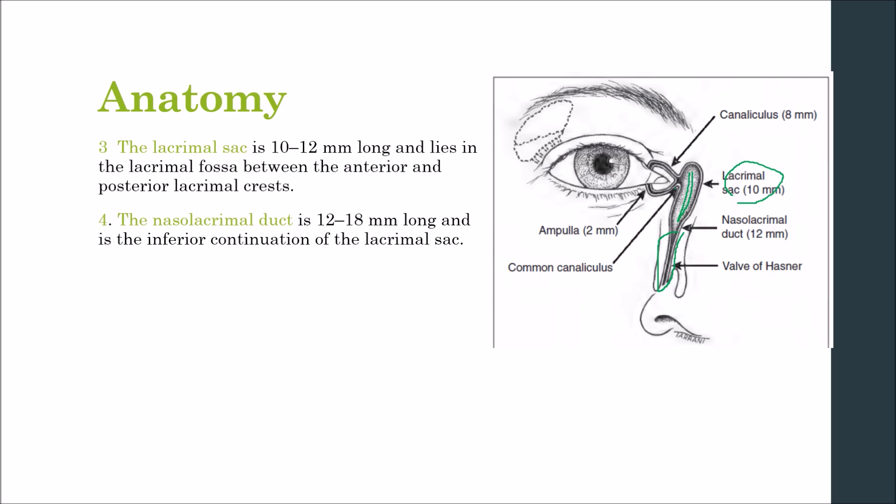The nasolacrimal duct (NLD) descends and angles slightly laterally and posteriorly to open into the inferior nasal meatus, lateral to and below the inferior turbinate. The opening of the duct is partially covered by a mucosal fold — similar to the valve of Rosenmuller — called the valve of Hasner.